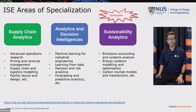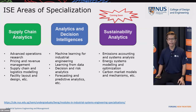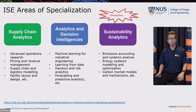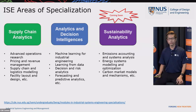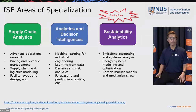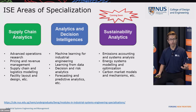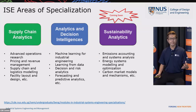In line with that, ISE offers three areas of specialization: supply chain analytics, analytics and vision intelligence, and sustainability analytics — the third being upcoming and in the pipeline. These three specializations are aligned with the three key areas of the future of work. For supply chain analytics, students deep dive into operations research, pricing and revenue management, and supply chain modeling. The second specialization goes further into machine learning for industrial engineering, decision and risk analytics, and predictive analytics.